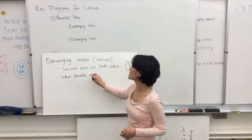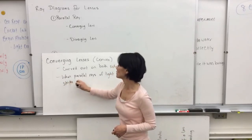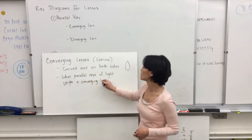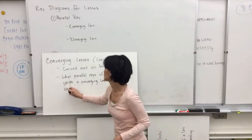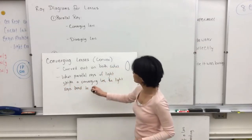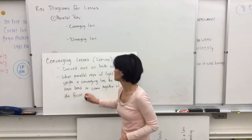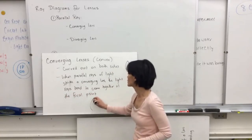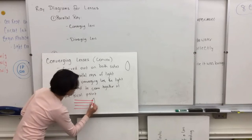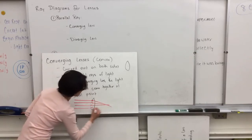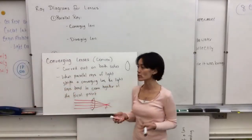When parallel rays of light strike a converging lens, the light rays bend to focus at a particular point — the focal point. So if you had a converging lens and a bunch of light rays parallel to each other hit the lens, they would bend such that they all meet at the same point, the focal point of that lens. Converging lenses converge light rays to a given point.